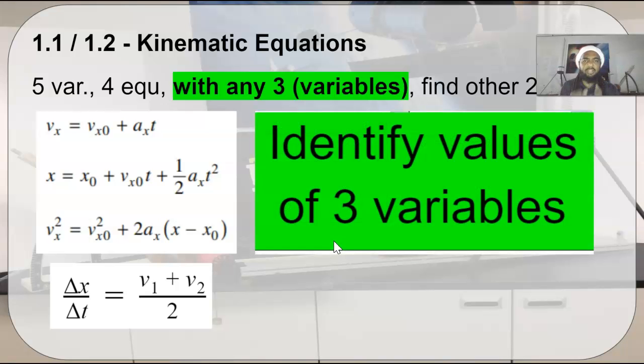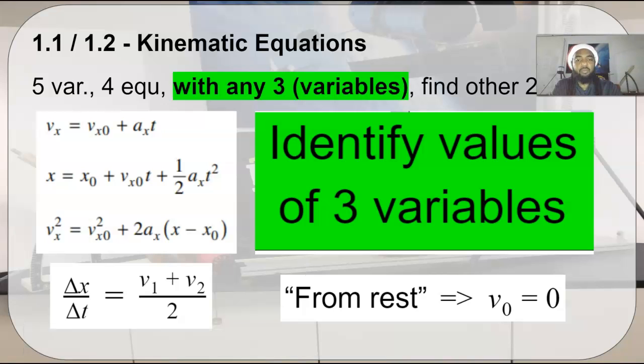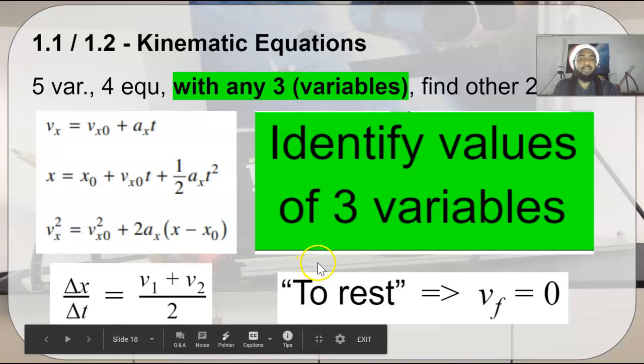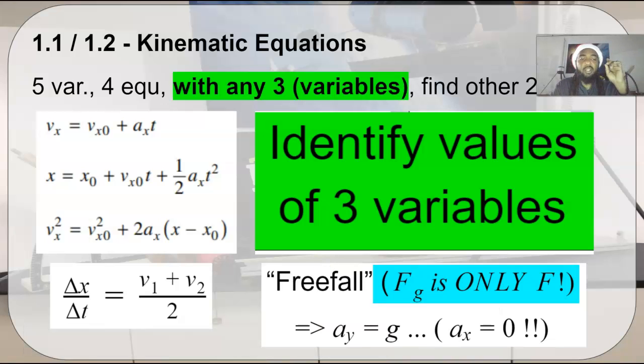Now, the key is, if you have three variables, you can find anything else that you need to find. The trick is in identifying those variables from the question that you've been given. For example, if a question says from rest, that is physics code for my initial velocity was zero. If a question says it slows down to rest, that's physics code for my final velocity is zero. Saying freefall implies that force of gravity is the only force, and therefore your acceleration in your y direction is going to be equal to g.